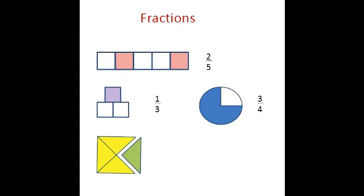So if I want to represent the green part, I would represent this as one over four, whereas the yellow parts I will represent as three over four.